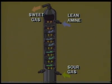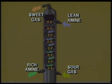Sweet gas leaves the top of the contactor to be sold or further processed. And at the base of the contactor, rich amine solution containing acid gases is discharged.